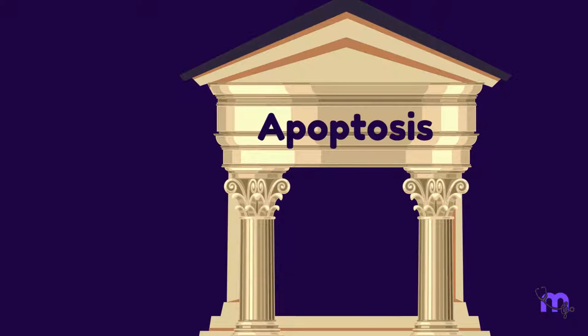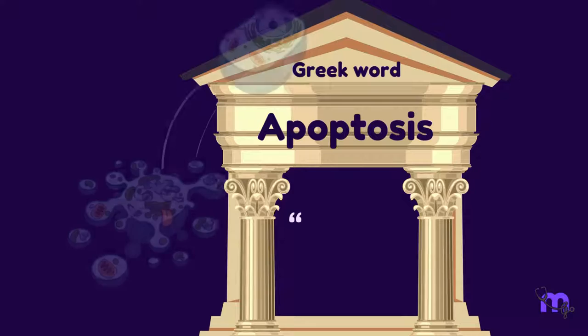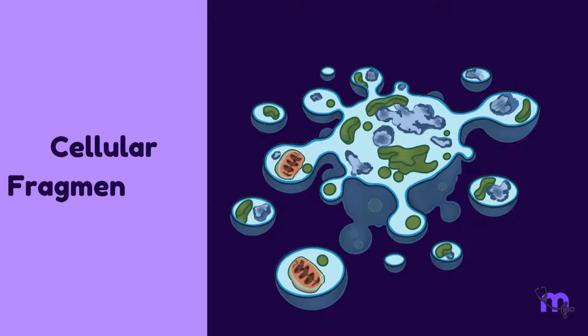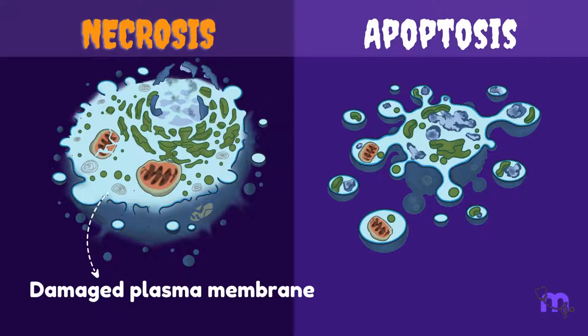Apoptosis is derived from a Greek word meaning falling off. It represents the classic morphological picture of cellular fragmentation. Unlike necrosis, the plasma membrane is not destroyed.